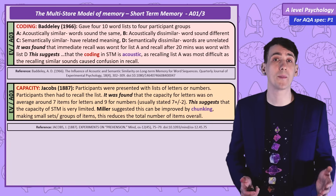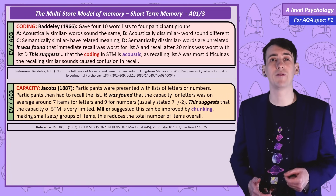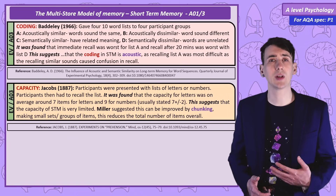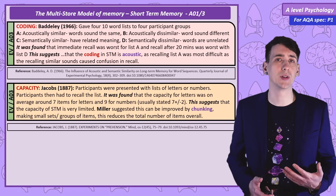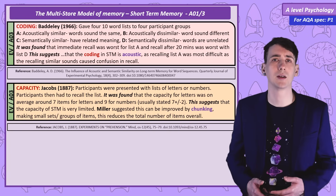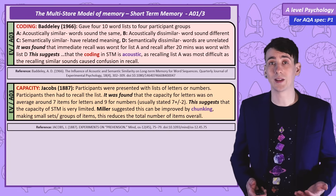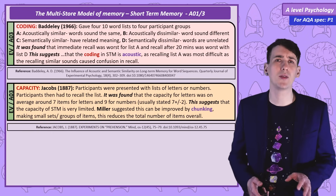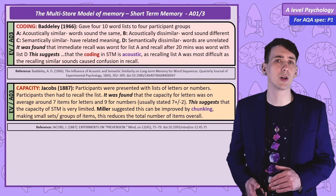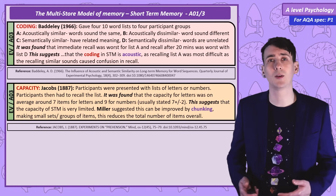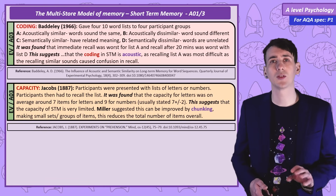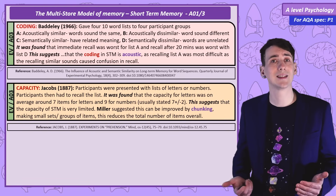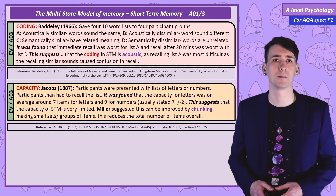Moving on to the capacity of short-term memory, we have research by Jacobs showing that when asked to recall lists of numbers, people could recall around 9, but when tested with letters, around 7 was the average. There was a range in what could be recalled, so we can say the capacity of short-term memory is 7 items plus or minus 2.